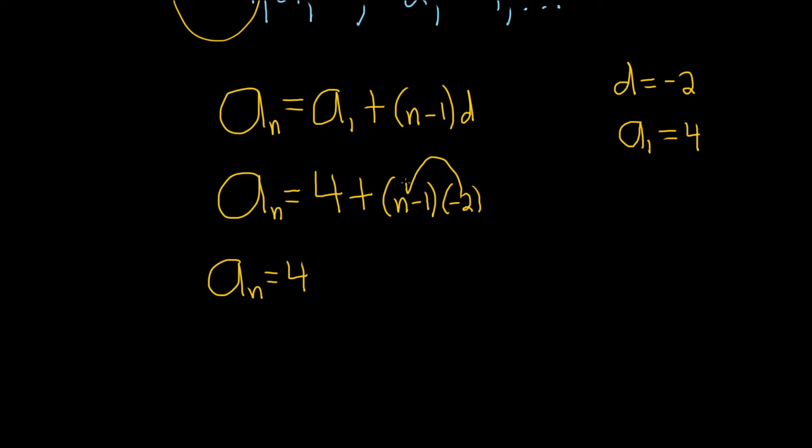Negative 2 times n is going to give us negative 2n, and negative 2 times negative 1 is going to give us a positive 2.